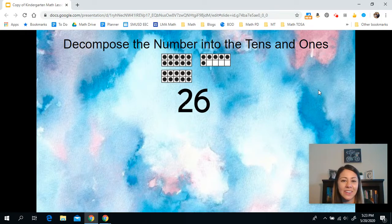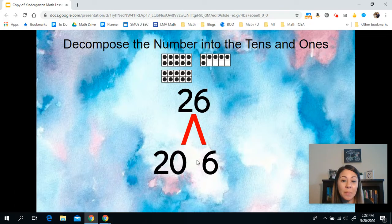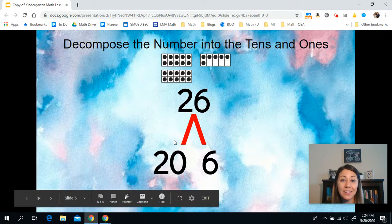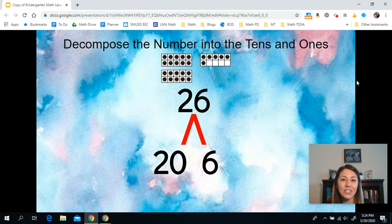Awesome. Take a look at the screen. So when we break apart 26, we break it apart. The tens become 20. There are 2 tens and the extra ones are six extra ones.